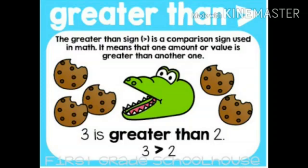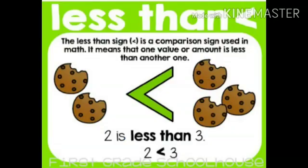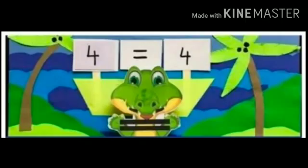Always remember one thing that hungry alligator always eats the largest number. Between two cookies and three cookies, Ali will open its mouth to eat three cookies as it is a bigger number. So, we will put here less than sign and we will say two is less than three.